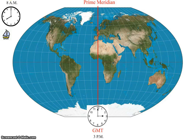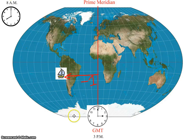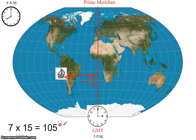On the ship it's eight o'clock in the morning, and in Greenwich it's three o'clock in the afternoon. Our time is earlier, so we must be to the west. How many time zones apart are we? From 8am to noon is four hours, and from noon to 3pm is another three hours, giving us seven hours total. Seven times 15 degrees — since each time zone is 15 degrees wide — gives us 105 degrees. Since our time is earlier, we're to the west: the longitude is 105 degrees west.